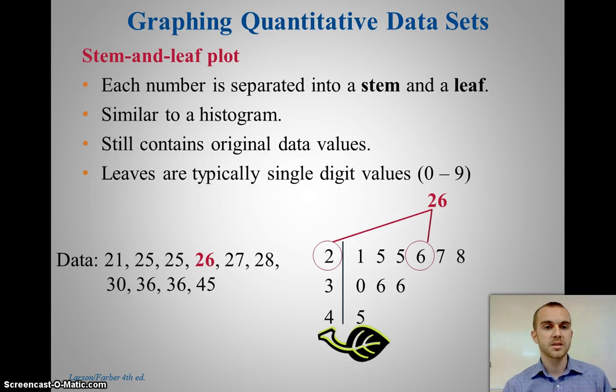With a stem and leaf plot, we take a number and separate it into its stem and its leaf, then we sort our data into the plot. It's somewhat similar to a histogram, except all the values are still contained within the plot. The leaves, which are the right-hand side, are always 0 to 9, and our stems can be any size depending on the values we're dealing with.